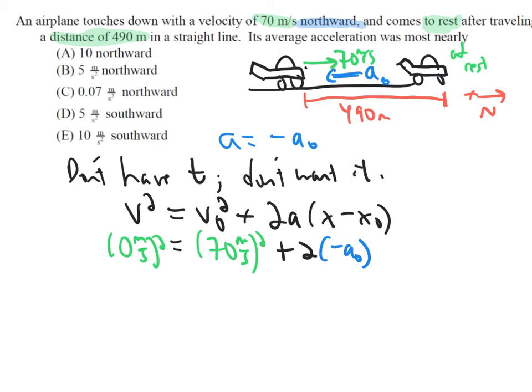And then we know that the distance is 490 meters and it starts at zero. Remember, we were allowed to say x equals zero here, so that x final is 490. That was up to us.